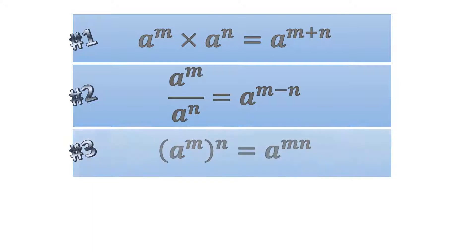Our third rule states that if we have a base with a power multiplied by another power, we multiply those two powers together. So a to the power of m, all raised to the power of n, equals a to the power of m times n — almost like the distribution rule.